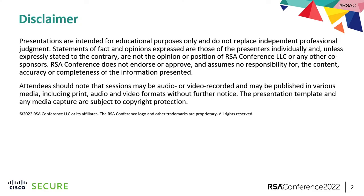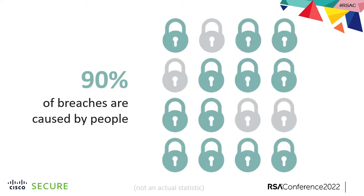This talk began with the following statistic. I'm sure you guys have seen this — this is not an actual statistic, but I'm sure you've seen this: 90% of breaches are caused by people. 90% of attacks start because a user clicked a phishing link. 90% of clouds will be insecure by 2025, says analyst firm, because users. We see this again and again. I've been in cybersecurity for too long — I stopped counting. I would just say I started when the movie Hackers came out.